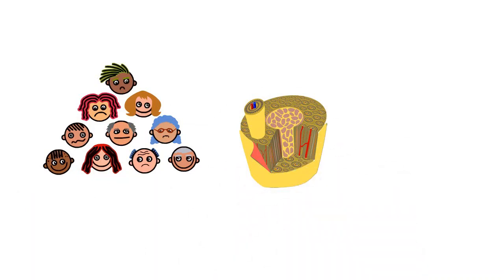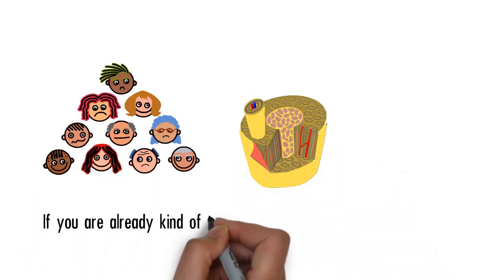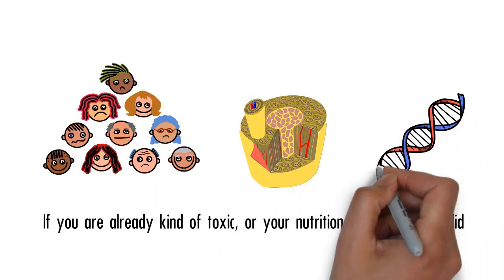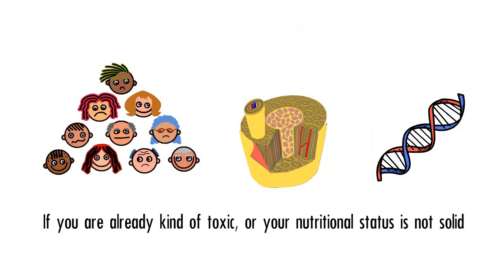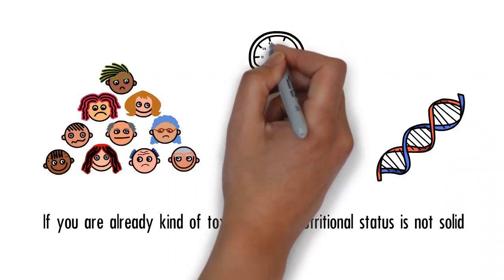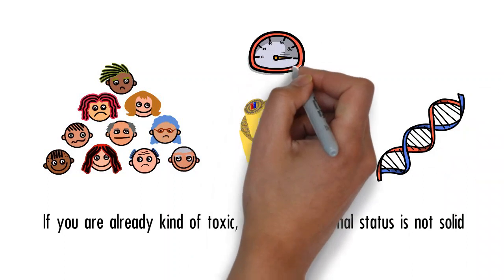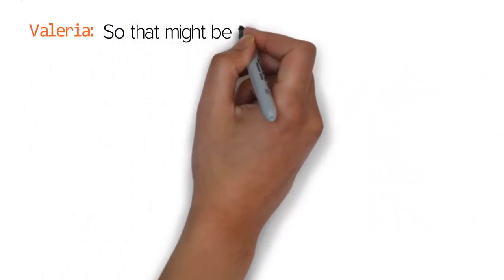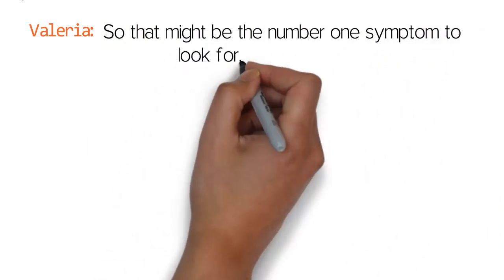Being that they're lipid soluble, they can go into all these different tissues. If you are already kind of toxic or your nutritional status is not solid or you have genetic susceptibility to mold toxins, you can display those symptoms a lot quicker than the other people in that environment. So fatigue is a biggie.